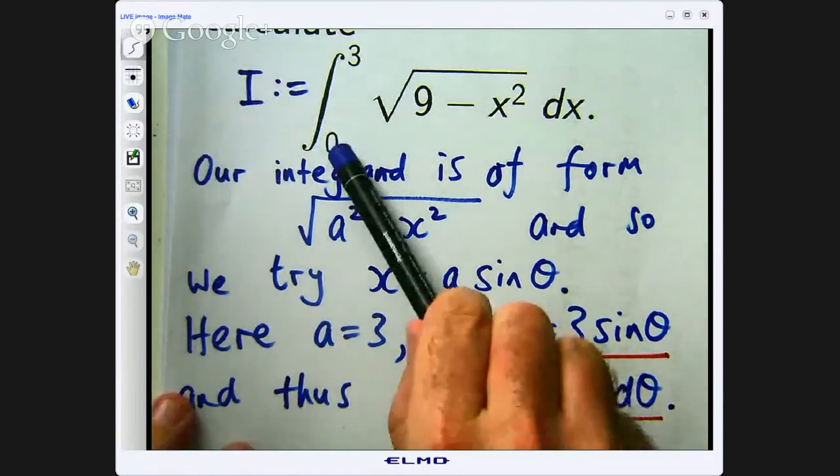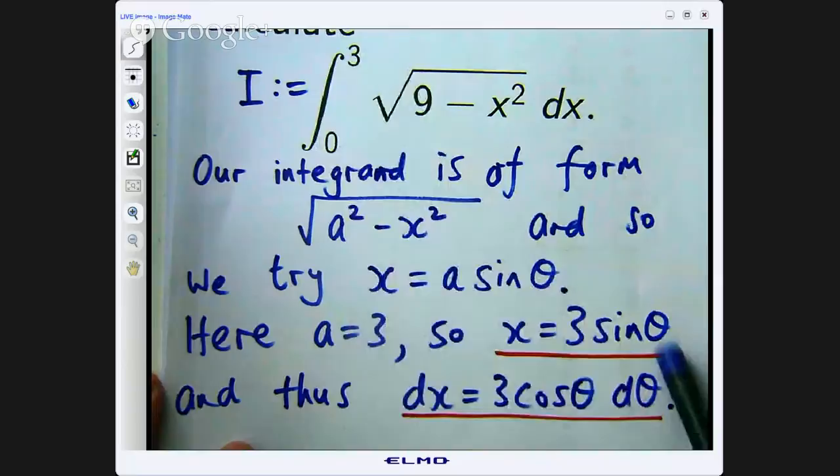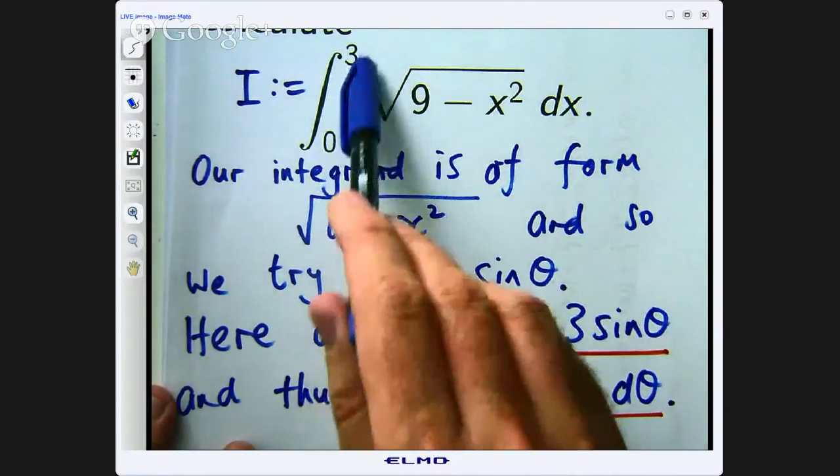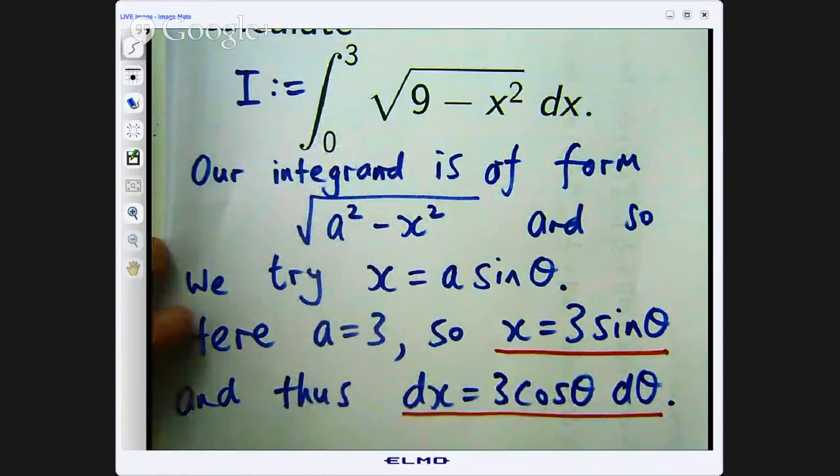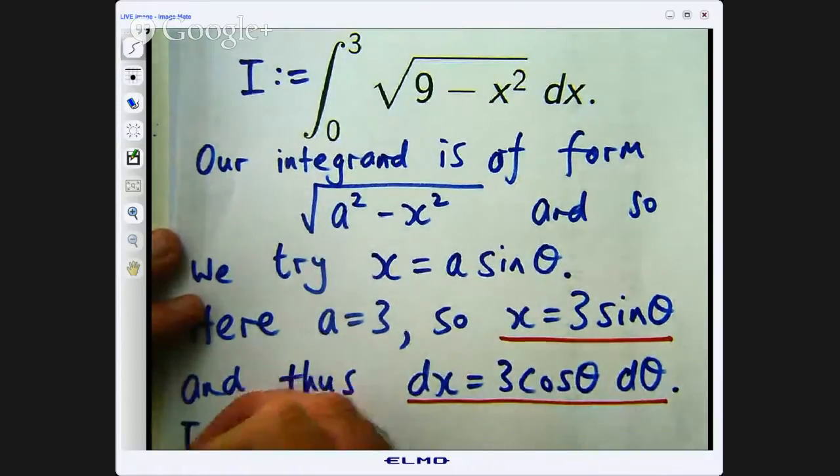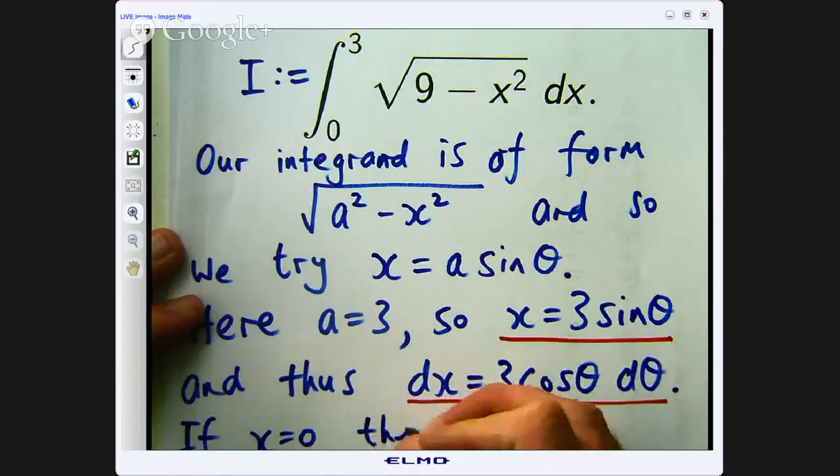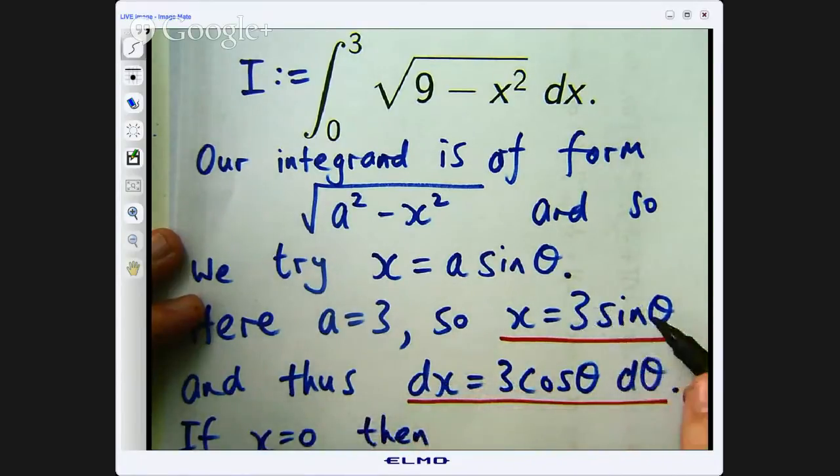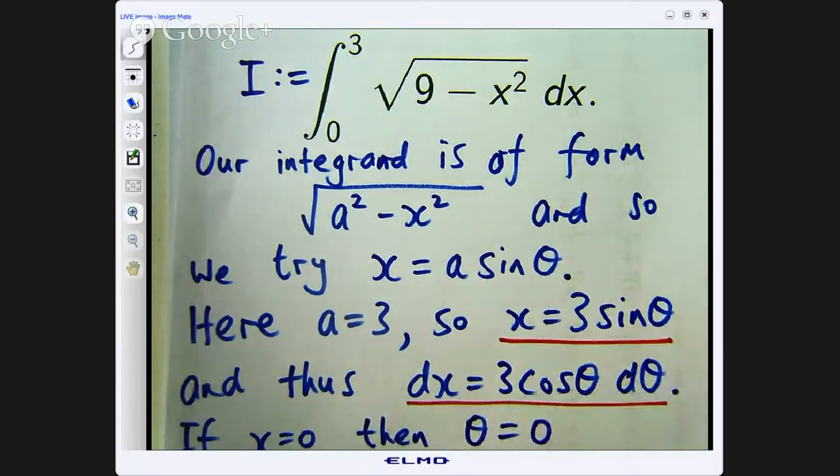You will notice that this is a definite integral so we are integrating from x equals 0 to x equals 3. Now with this new substitution we want to put everything in terms of this theta and d theta. So we are going to have to make appropriate changes to the limits of integration. Alright so if x equals 0 so 3 sine theta equals 0 so sine theta equals 0 so that means theta equals 0.